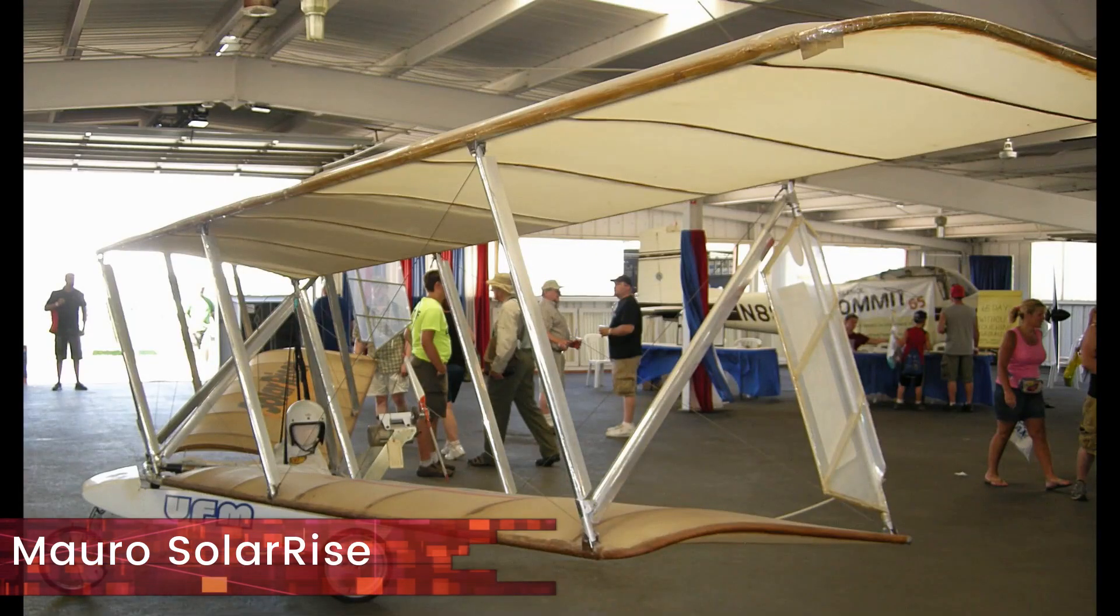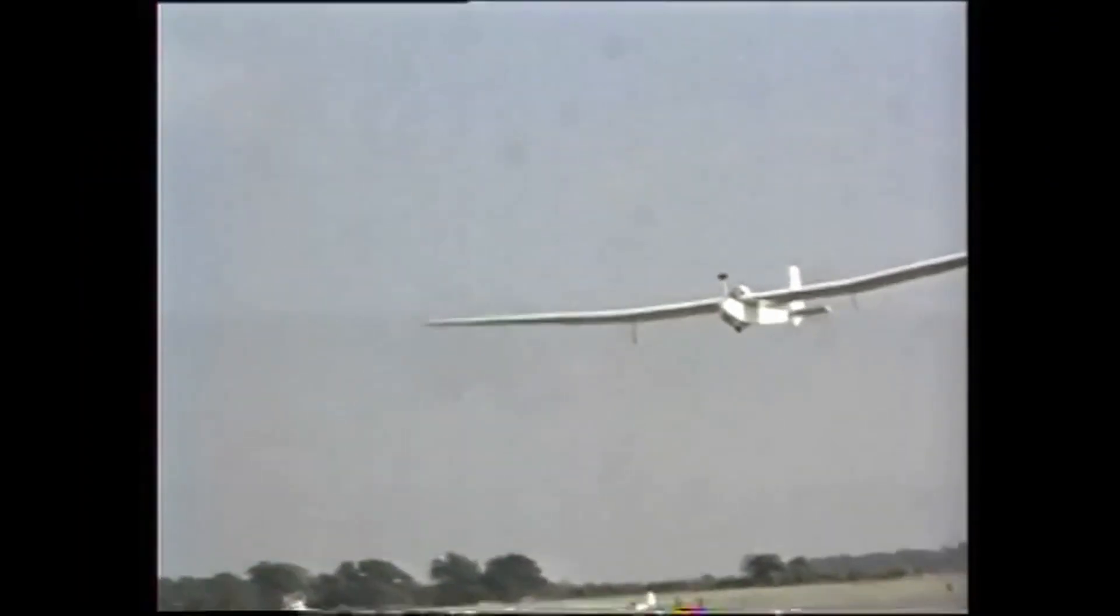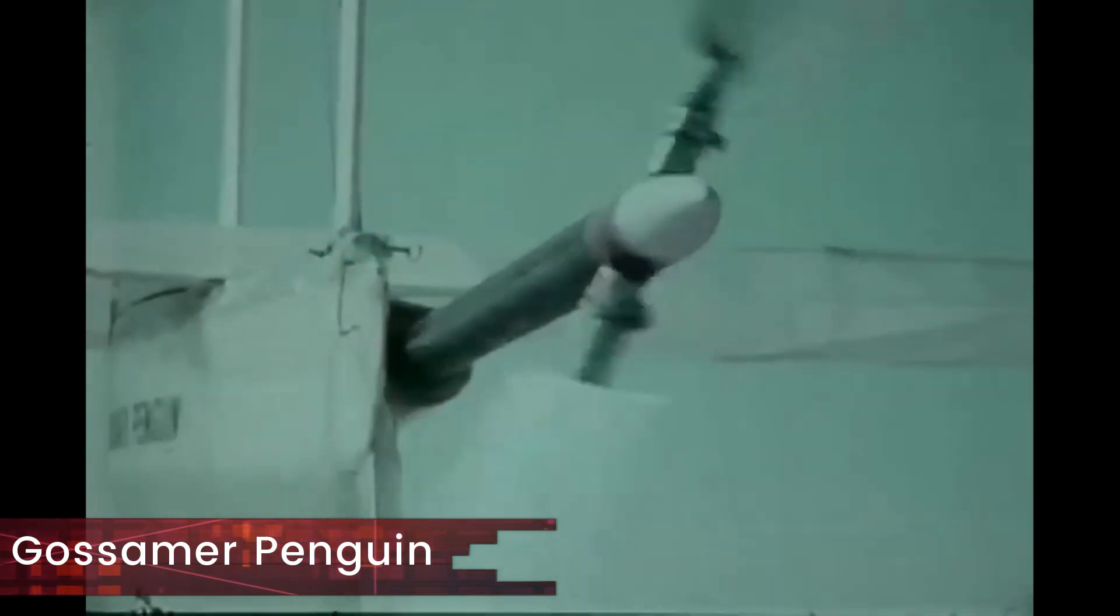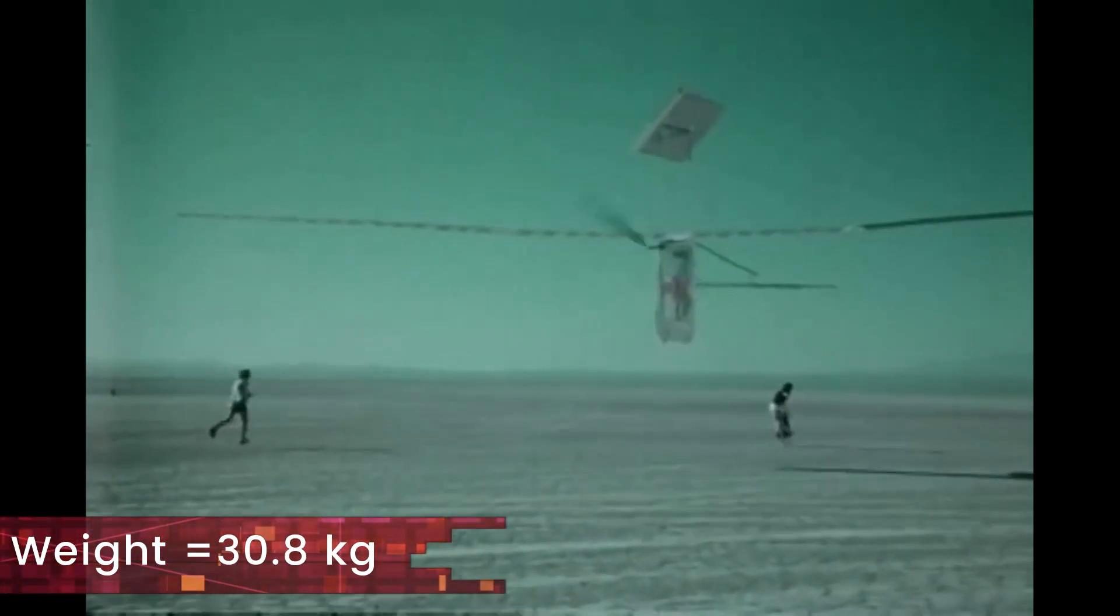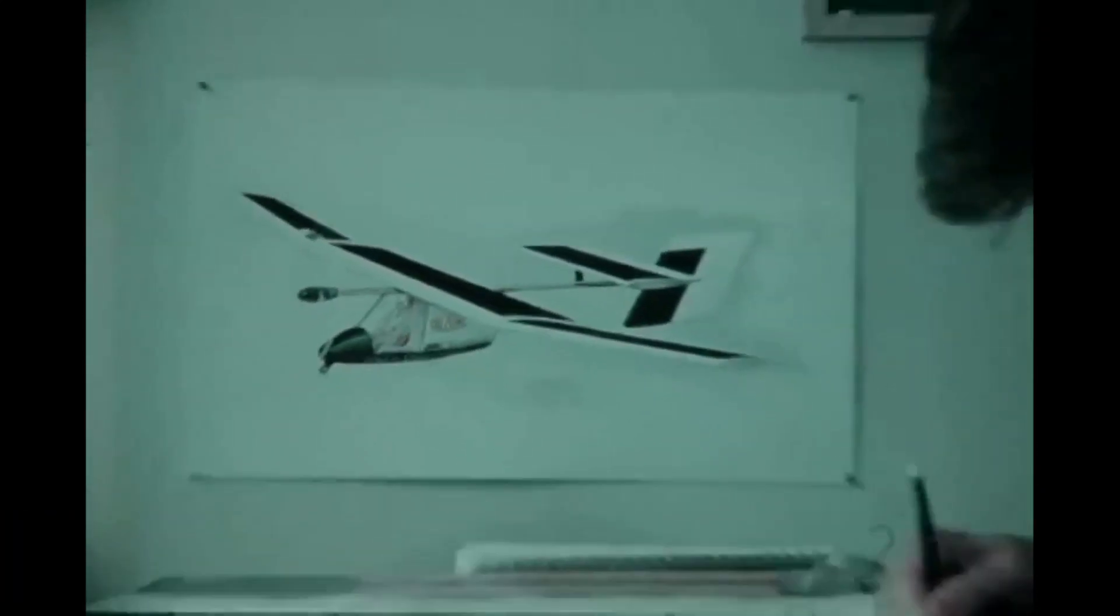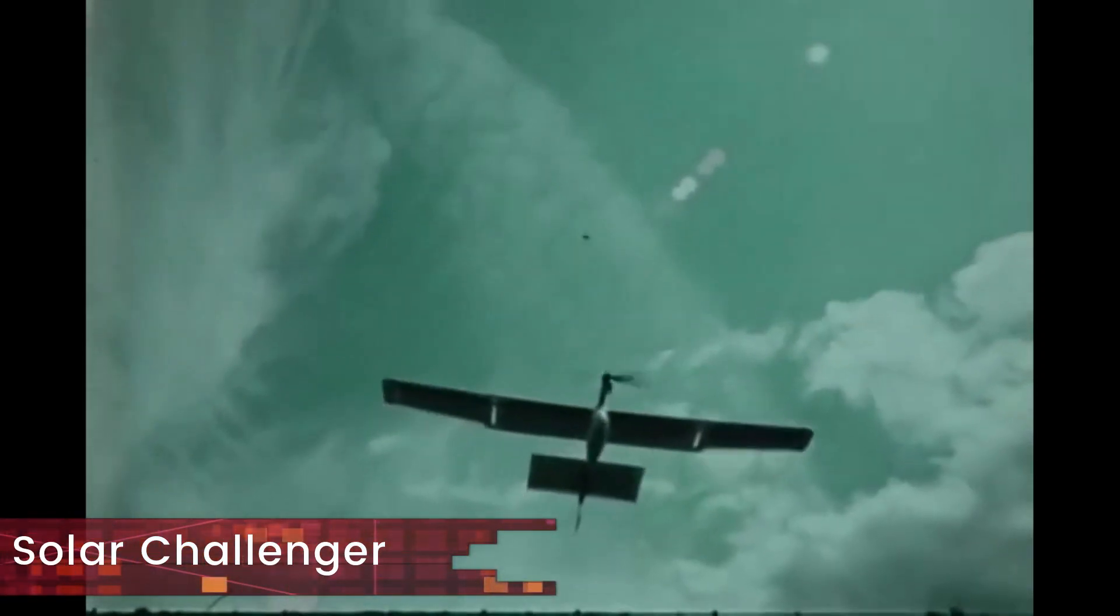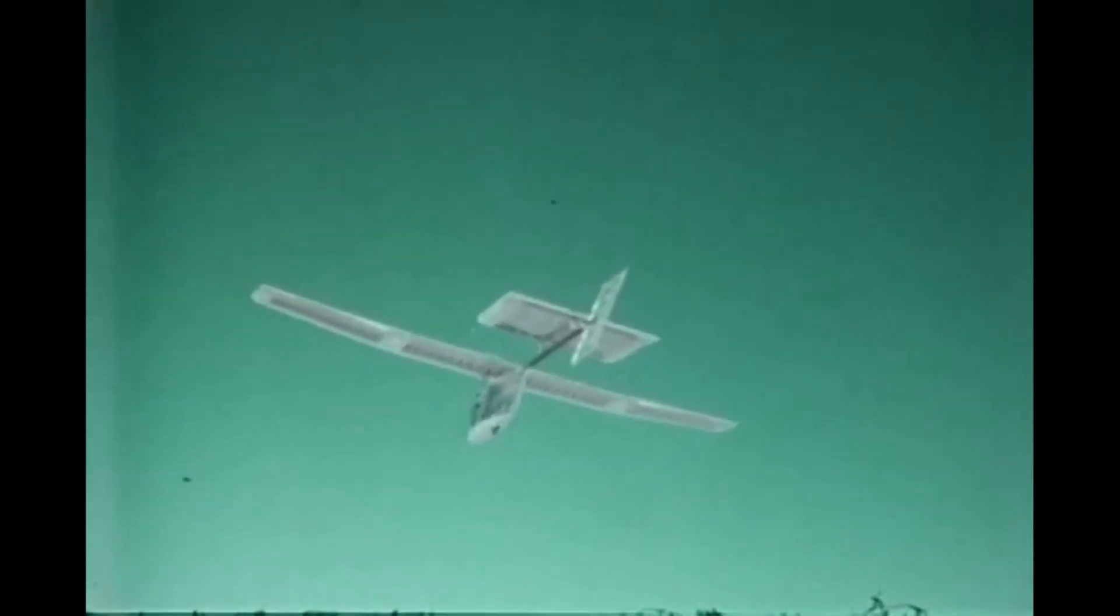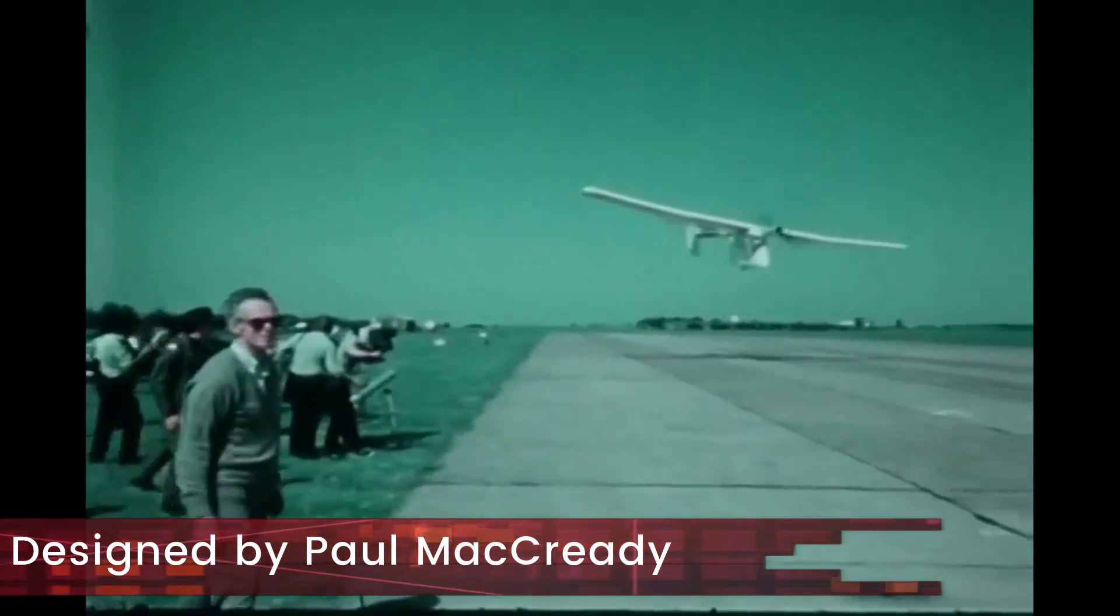After that came along the Moro Solar Rise, followed by the Solar One and the Gossamer Penguin. The Penguin could generate 600 watts of power. It had an empty weight of just 30.8 kilograms. The success of Penguin prompted the development of Solar Challenger which was designed to be the first solar aircraft to cross the English Channel.